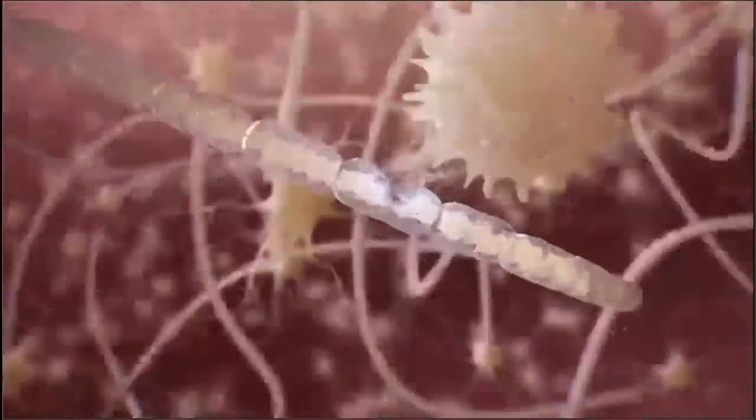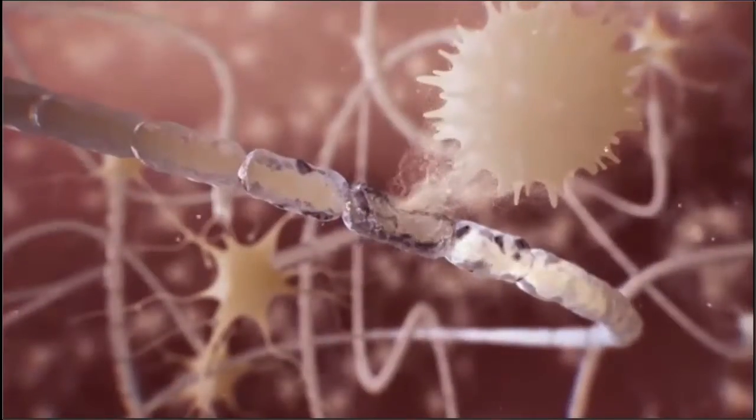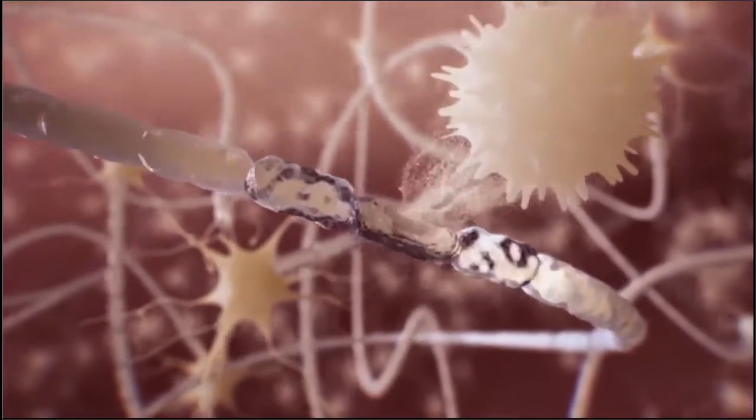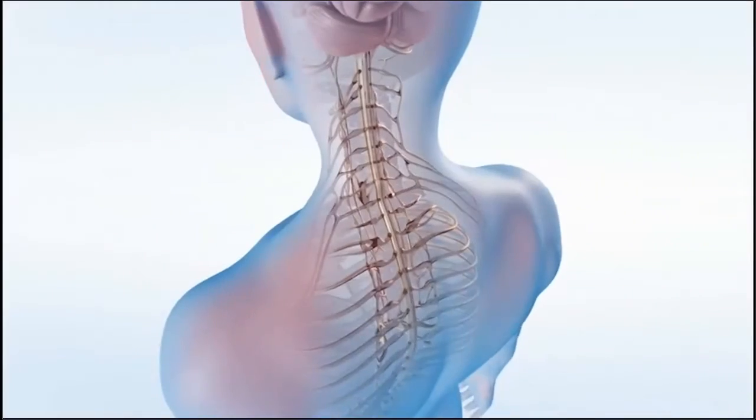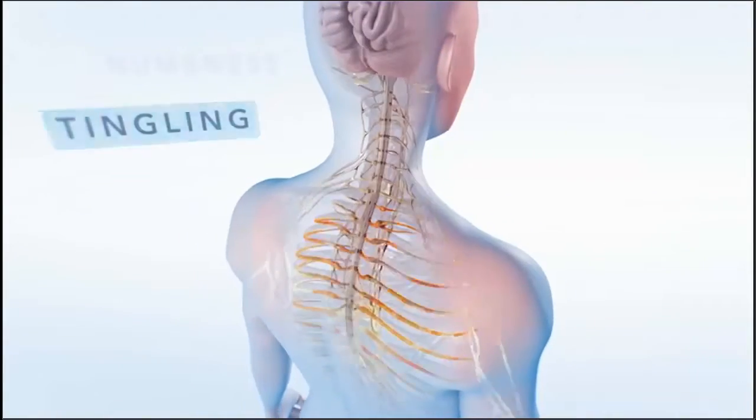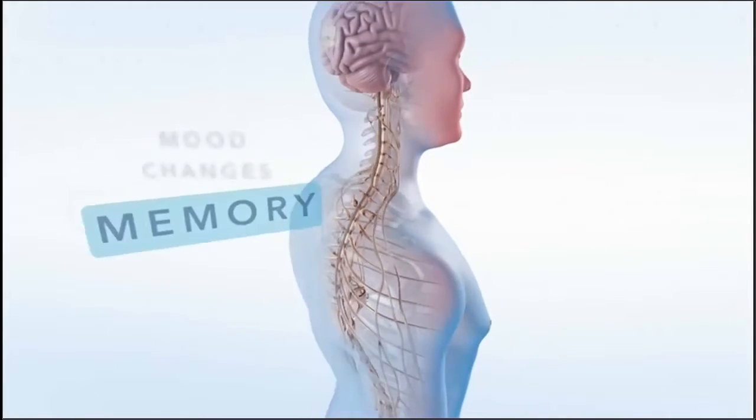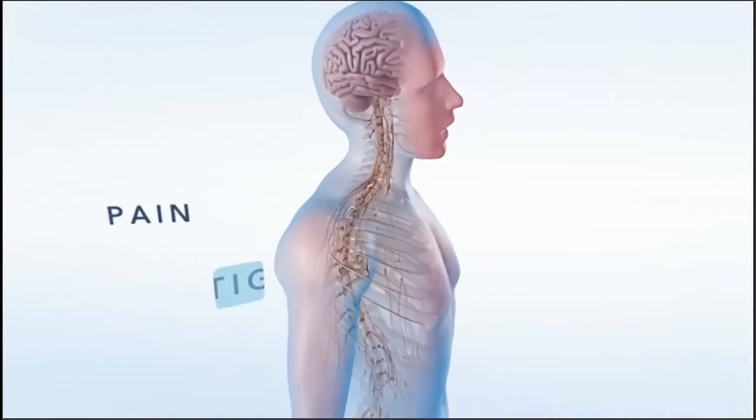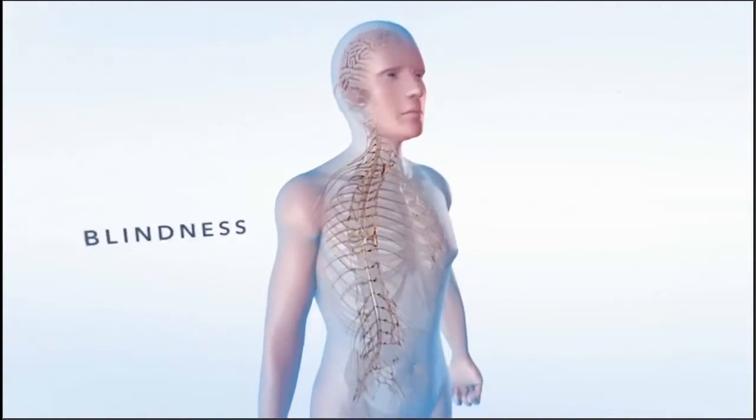The resulting damage to myelin that insulates wire-like nerve fibers is a disruption of signals to and from the brain. This interruption of communication signals causes unpredictable symptoms such as numbness, tingling, mood changes, memory problems, pain, fatigue, blindness, or paralysis.